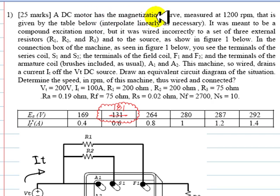A DC motor has a magnetization curve that was measured at 1200 rpm and is given by the table below. In this table there was a typo. This 131 should be 181 as was explained.